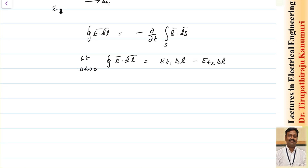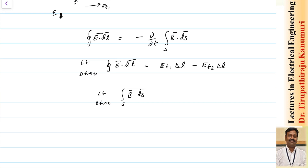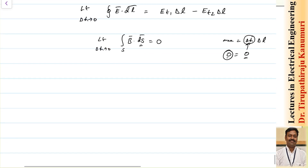On the right hand side, taking the limit as delta h tends to 0, we need to calculate the surface integral of B dot ds. The area of the surface equals delta h multiplied by delta l. As delta h tends to 0, the area approaches 0, so the right hand side of the equation becomes equal to 0.